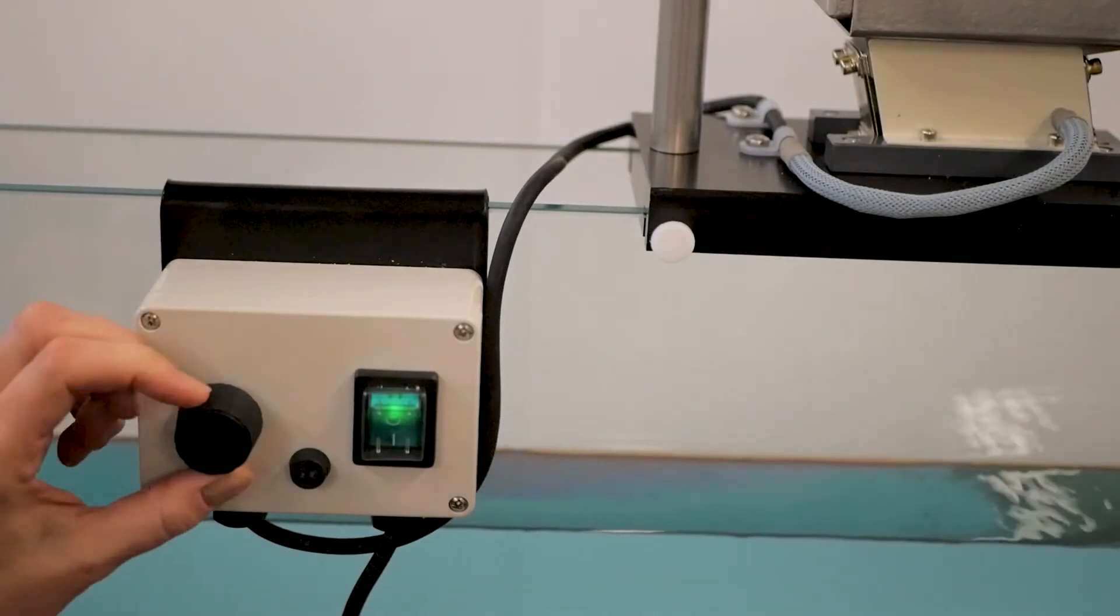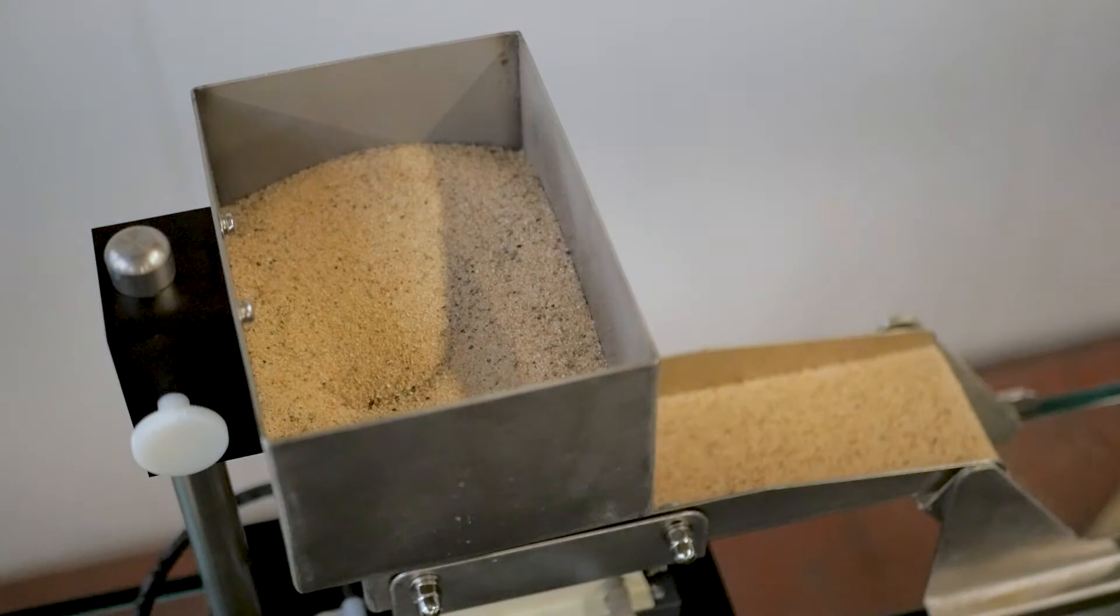The speed of the vibration can be adjusted on the control box using this dial, affecting the speed the sand moves towards the chute.